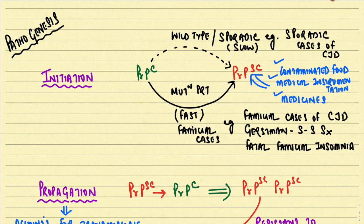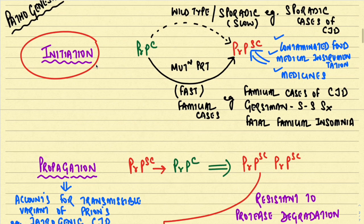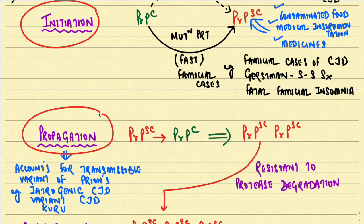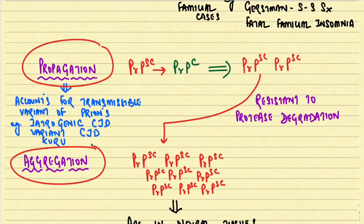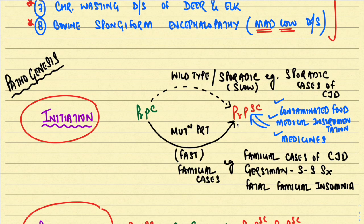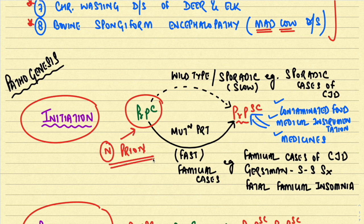There are three important stages in the pathogenesis of prion's disease: an initiation stage, followed by propagation, and lastly aggregation. To understand how PrPSc is formed, the first and most common way is from a normal prion protein PrPC. As mentioned, prion's disease can be sporadic, familial, or iatrogenic in nature.